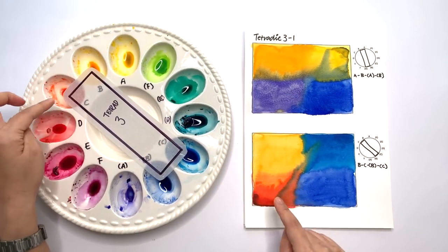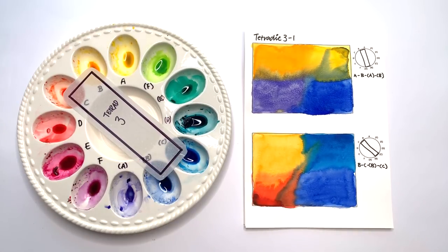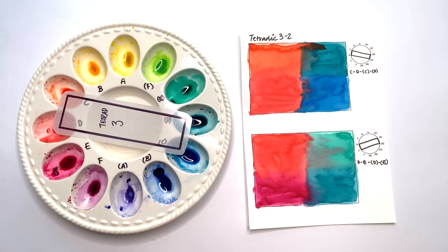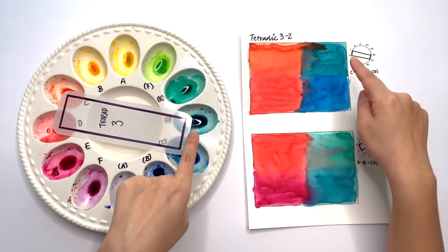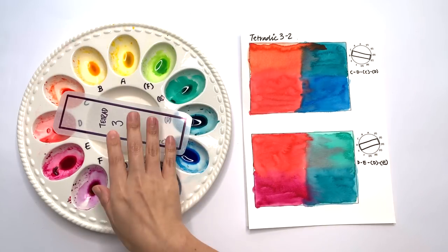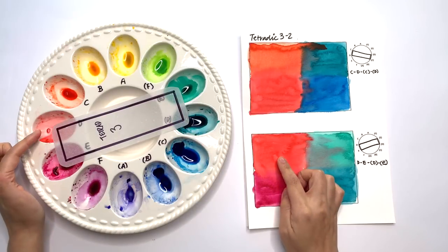Next one is C, D, C bracket and D bracket. And then we move along again to have D, E, D bracket.